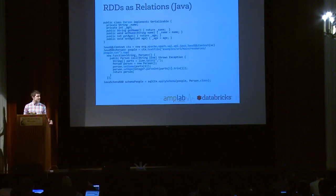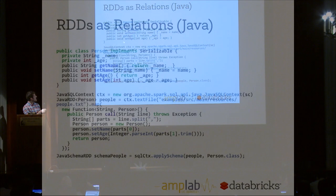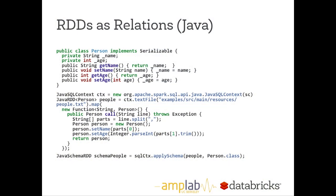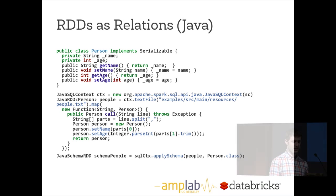Here's the Java example. Instead of a case class, you create a Java bean with getters and setters, map your data into that class, then call apply_schema passing in the class so Spark can get the schema. In all of these cases — Python, Scala, Java — you're just taking your data, applying structure to it, and turning it into a schema RDD.